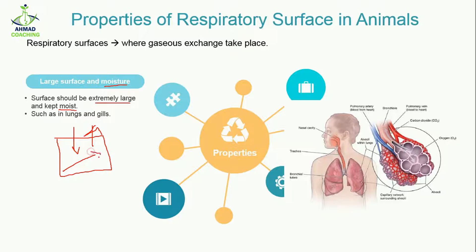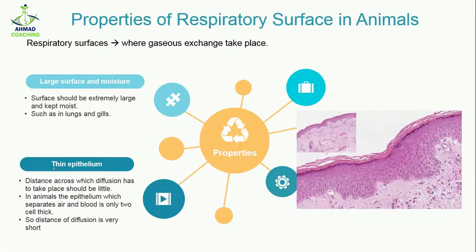Examples of large surface area and moisture can be seen in lungs and gills of fish. Here you can see the lung — the large surface area of the lung is because of the alveoli present in the lungs. There are millions of alveoli present in the lungs. Moreover, there is a water layer present around them which helps in the dissolution and exchange of gases.